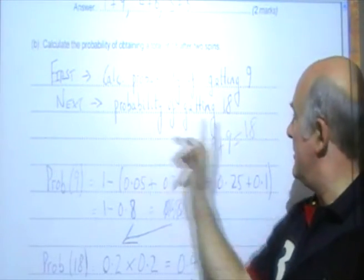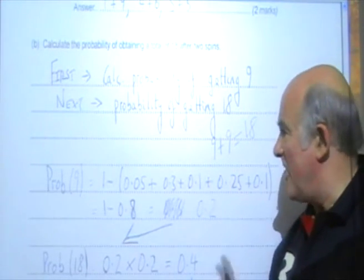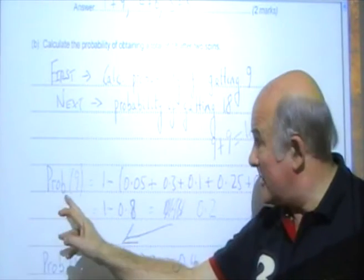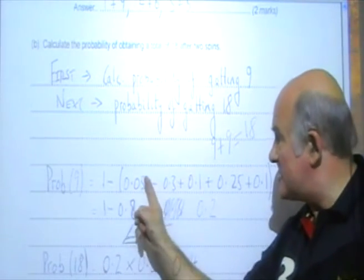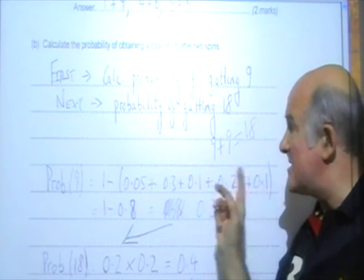Calculate the probability of 9, 9 plus 9, 18. Fine. And it's correct. Look, one take away the sum of all the probabilities in the table.